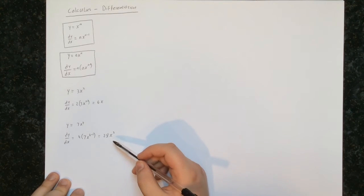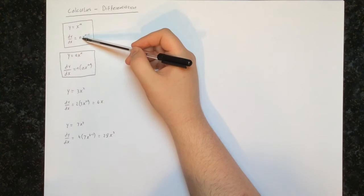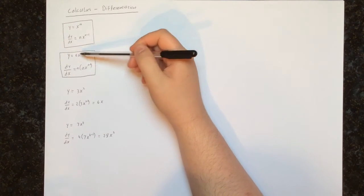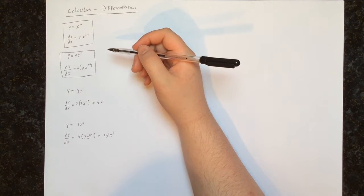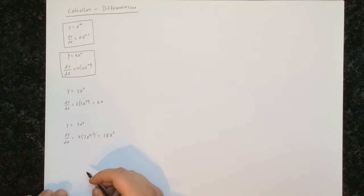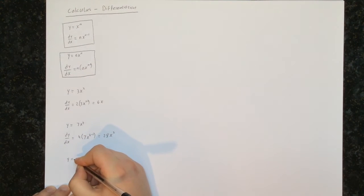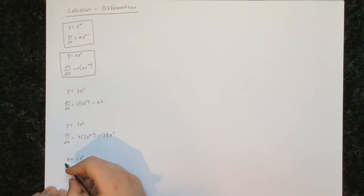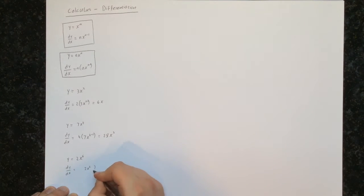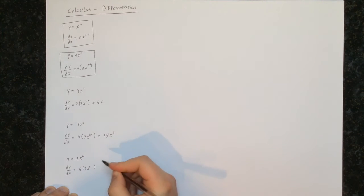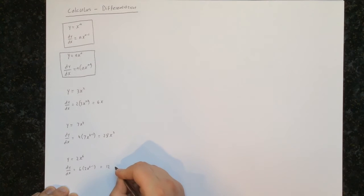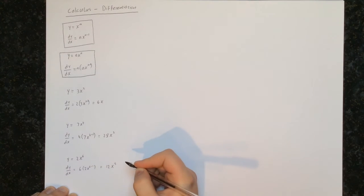This works in the same way as it did in the last video. The only difference is now our answers have a number in front of x, so we use a slightly different formula, but every time we multiply by the power and reduce the power by 1. For example, y equals 2x to the power of 6: we multiply by the power 6 and reduce the power by 1, leaving us with 5. So dy/dx equals 6 times 2, which is 12, times x to the power of 5.